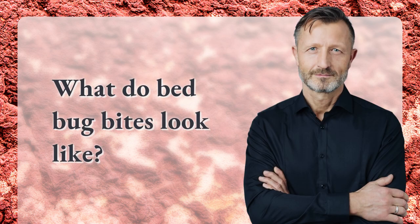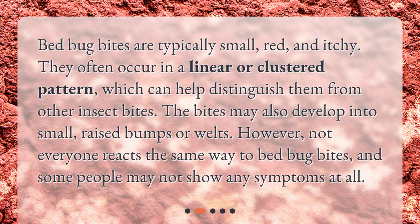What do bed bug bites look like? Bed bug bites are typically small, red, and itchy. They often occur in a linear or clustered pattern, which can help distinguish them from other insect bites. The bites may also develop into small, raised bumps or welts. However, not everyone reacts the same way to bed bug bites, and some people may not show any symptoms at all.